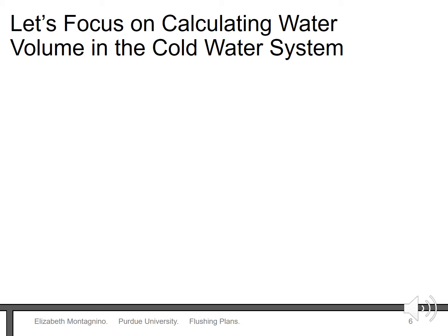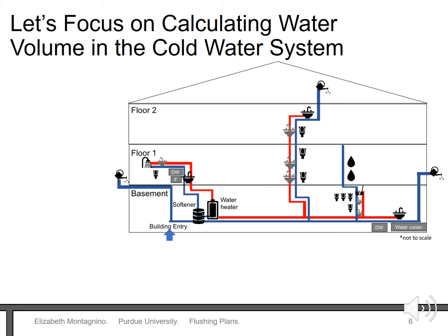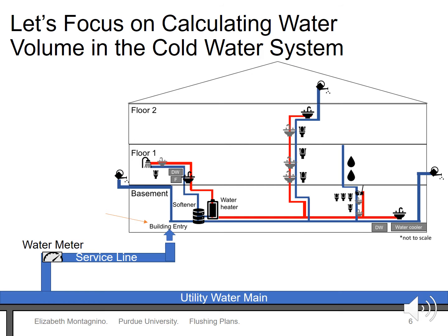Let's focus on calculating the amount of water in a plumbing system. This image shows what a building may contain. The basement is where the water pipe enters the building from the street through what's called a service line. From there the water travels through a water softener for treatment and then to different locations in the building. Hot water is created by taking cold water after it passed through the softener and heating it. Hot water then travels through separate building pipes to the water use locations. You can see sinks, showers, water fountains, and outdoor spigots are shown in this drawing.